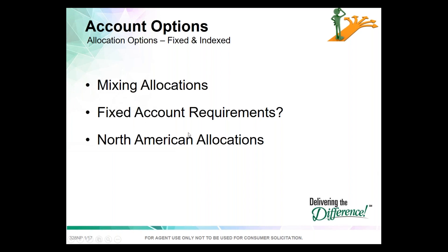Some companies require that some money goes into the fixed account. North American does not have any fixed account requirements — you don't have to allocate any funds to the fixed account, and funds don't even need to sit there until the next index sweep date. With North American, you can allocate between different index selections and the fixed account in as small as 1% increments.